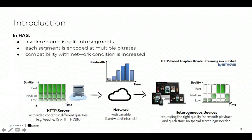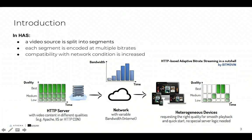In HTTP Adaptive Streaming, or HAS, a video source is split into different segments, and each segment is encoded at multiple bitrates or qualities, and then, based on the available bandwidth, the most appropriate representation is selected and sent to the client to be displayed. In this case, compatibility with network conditions is increased.